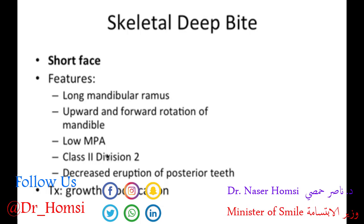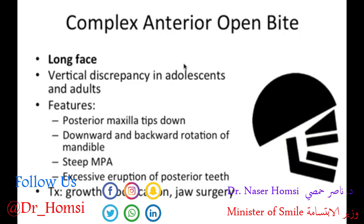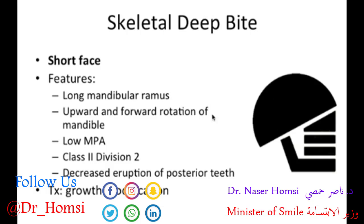Skeletal deep bite is the exact opposite of complex anterior open bite — it's a short face instead of a long face. The features are completely opposite: a long mandibular ramus, upward and forward rotation of the mandible, a low mandibular plane angle, usually a class II malocclusion with division 2 — which involves dumping of the incisors — and decreased eruption of posterior teeth.